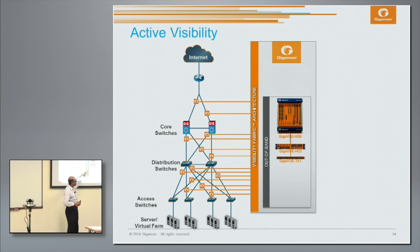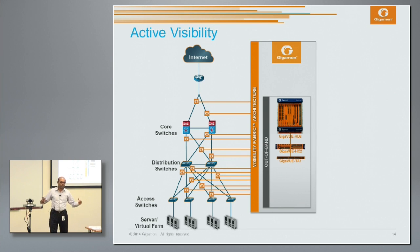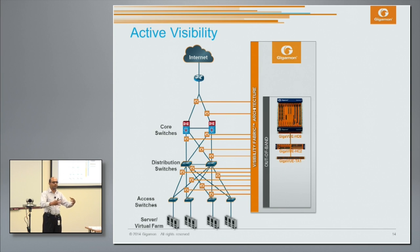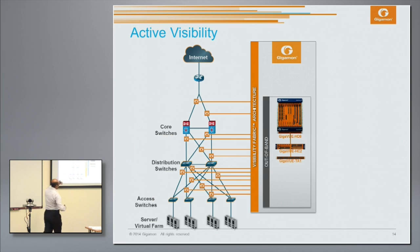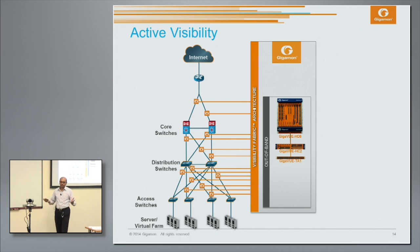There are a lot of players in the market, and I would contend that this is where the similarity stops. We have a full portfolio of solutions which allows you to acquire traffic in the most efficient way possible. For pervasive visibility across a large, mega-scale data center, we've got solutions for that — called the TA1. And if you want an efficient way to aggregate all those traffic sources into a core node where you do certain traffic intelligence before it's shipped off to destination devices, that's where the HC2 or the HD8 form factors come in.